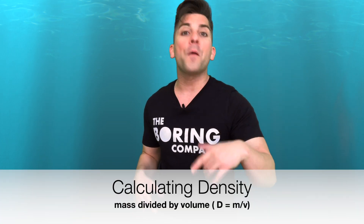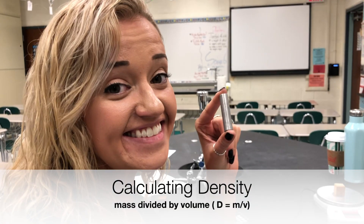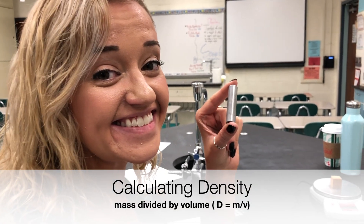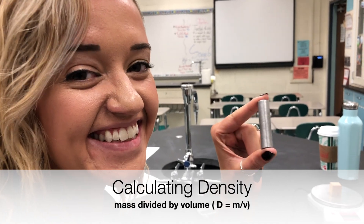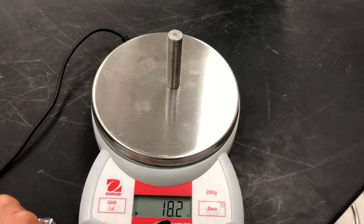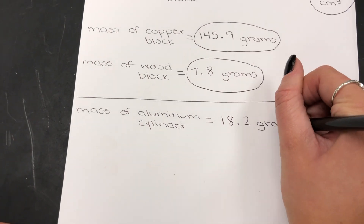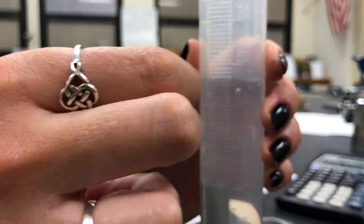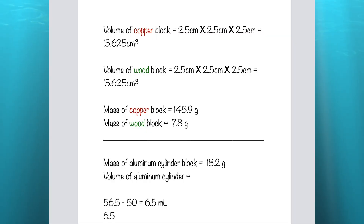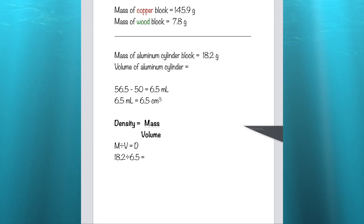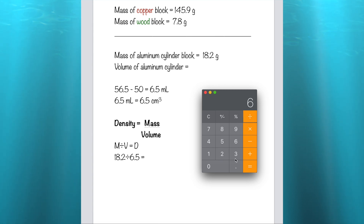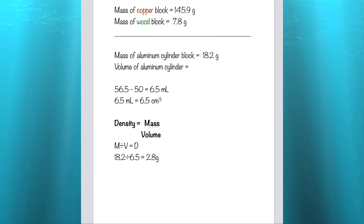An object's density can be determined if we divide the object's mass by its volume. Let's say you wanted to calculate the density of this aluminum cylinder. The first thing you would need to do is find its mass. Then you would need to determine its volume — let's use our water displacement method from the last video. All I need to do is divide these two numbers to get the answer: 2.8 grams per cubic centimeter.